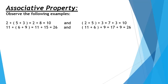The third property is associative property. To associate means to connect or join with something. Let's learn this with a few examples. Here you can see that we are adding three numbers: 2 plus 5 plus 3. In the first calculation, I have made a group of 5 and 3, and then I am adding that answer to 2. So the sum is 10.